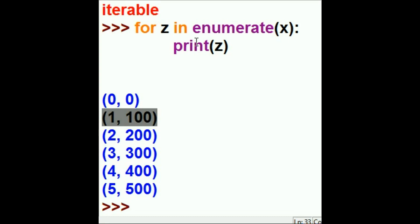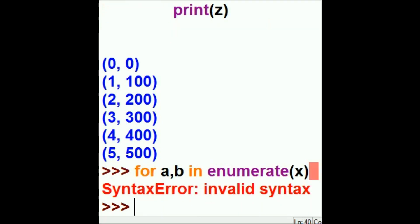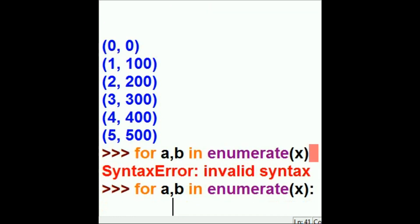Now there's another way to do this. Here we did for Z in enumerate X. But maybe you don't want it to be in a tuple. So if you don't want it to be in a tuple, for a, b in enumerate X. Oh, I'm in typo hell. One more time. Put the colon in there. There we go.